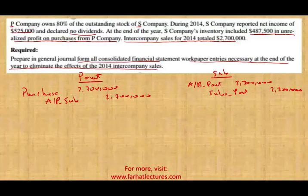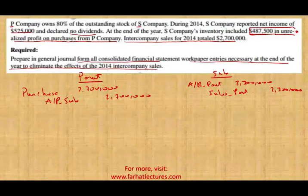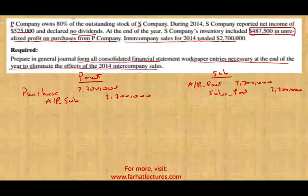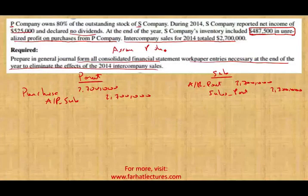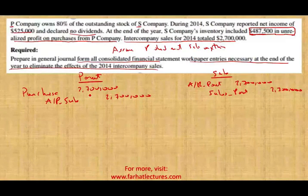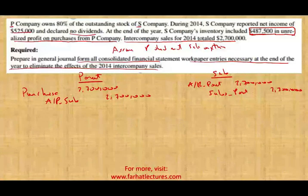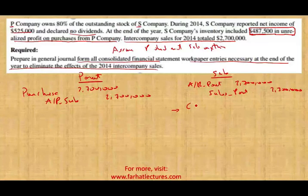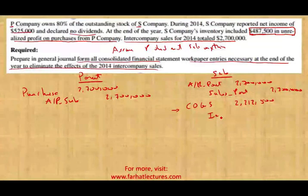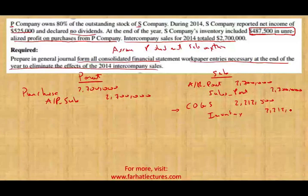I'm going to make an assumption here to explain the journal entries and show how we end up with them. I'm going to assume that P did not sell anything from the purchases — P bought those 2.7 million on the last day of the year and was not able to sell anything to outsiders, so no sale has happened. That means S Company has another entry to make because S Company has a profit of 487,000, meaning the cost of goods sold was 2,212,500, and they reduced their inventory by 2,212,500.